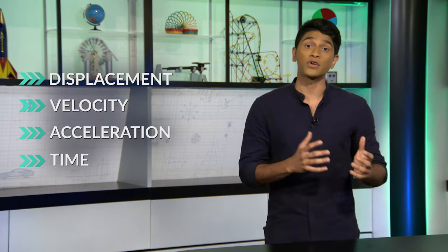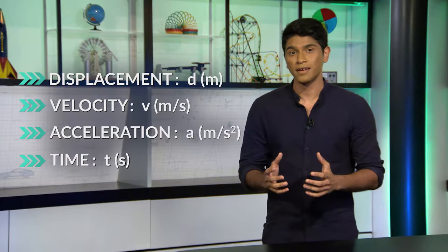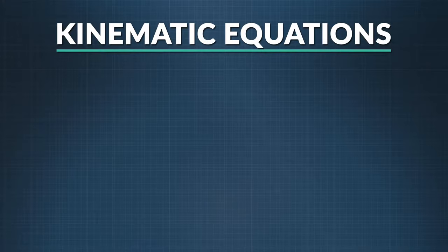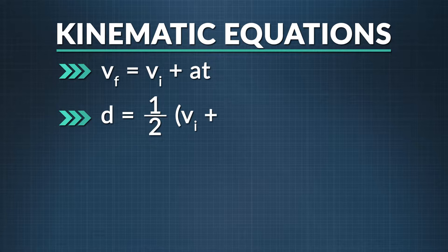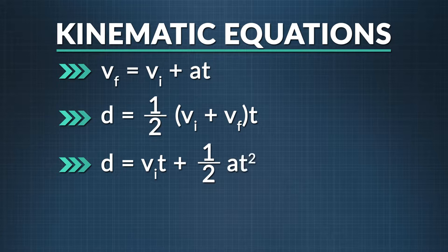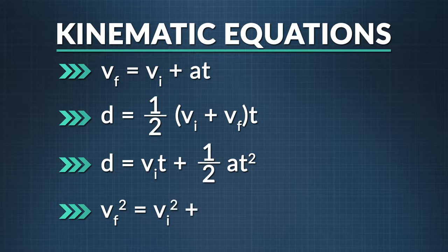There are four main kinematic equations, and they can help us navigate most kinematic problems. Each one has three or more of the variables: displacement, velocity, acceleration, and time. The first states that final velocity equals initial velocity plus acceleration multiplied by time. The second says displacement equals one-half times the sum of initial and final velocity multiplied by time. The third states displacement equals initial velocity times time plus one-half times acceleration times time squared. The fourth states that the square of the final velocity equals the square of the initial velocity plus two times acceleration multiplied by displacement.